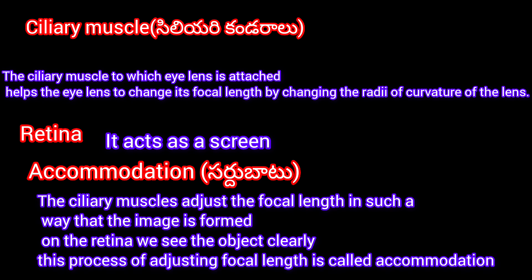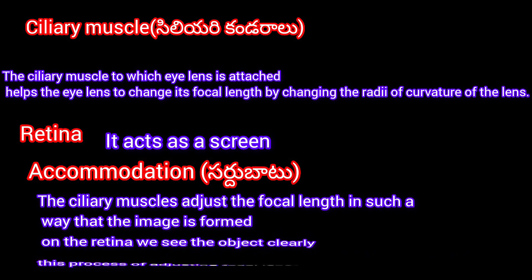Accommodation (Nabhyantara Sardhu Bhattu): The ciliary muscles adjust the focal length in such a way that the image is formed on the retina, allowing us to see objects clearly. This process of adjusting focal length is called accommodation (Kataka Nabhyantram Sardhu Bhattu Chesukune Prakriya).